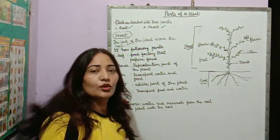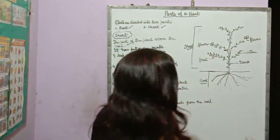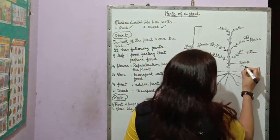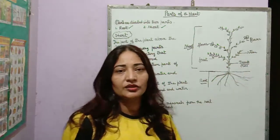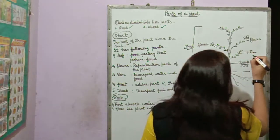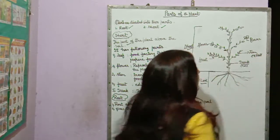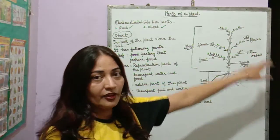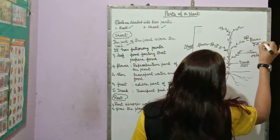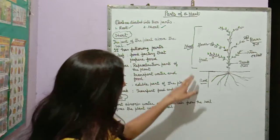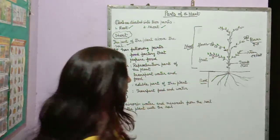Shoot system has many parts that are visible to you. Trunk — which you call 'tana' in Hindi — is visible. Then stem is also visible. Then flower, which you call 'phool' — flowers are also visible. Next is fruit — fruits are also visible; they grow on the branches of trees.